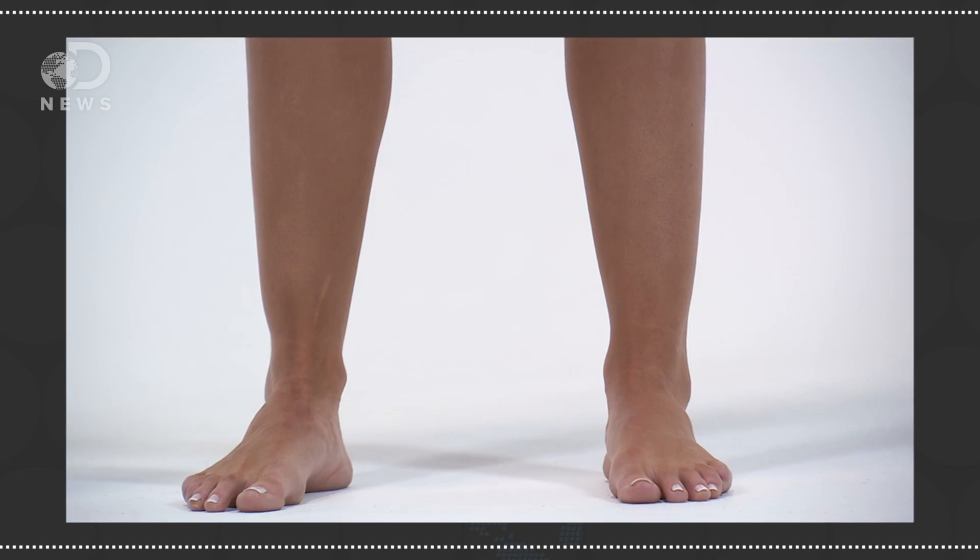Human toes specifically are a little newer to the scene. Of all other living primates, we're the only ones that exclusively walk upright on two legs. Other primates like chimps have little grippy feet, and ours are just kind of weird looking in comparison.